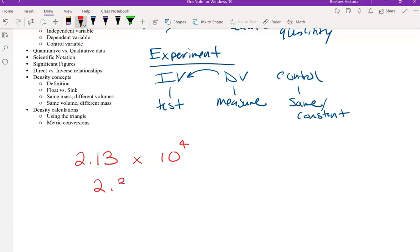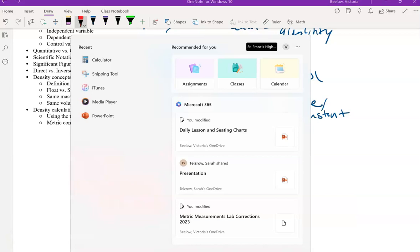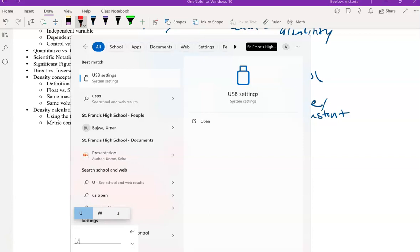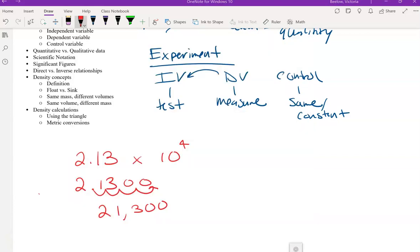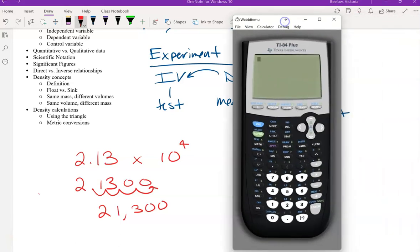So, for example, 2.13 times 10 to the fourth. This, as a regular number, would be if you moved 1, 2, 3, 4 spaces to the right. Remember, if this exponent is positive, that means it's a really big number. So, this number, if I were to actually write it out, would be 21,300. And I can actually show you that in the calculator. Hold on, let me find my calculator. Sorry, I was having technical difficulties.